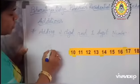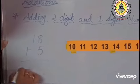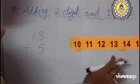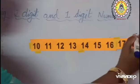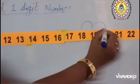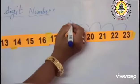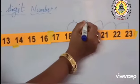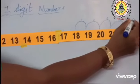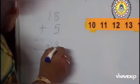Let us add one more sum children. 18 plus 5. See, from 18, we have to count 5 steps children. Here it is 18 — 1, 2, 3, 4, and 5. How many steps? 1, 2, 3, 4, and 5. What is the answer children? 23. 23 is the answer.